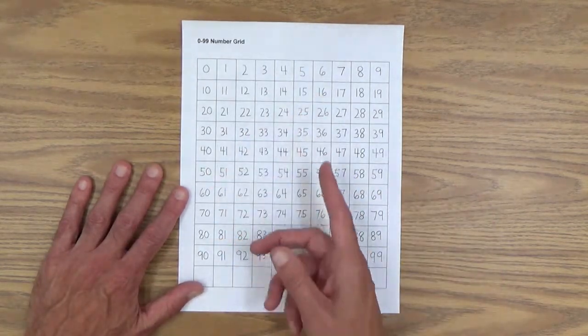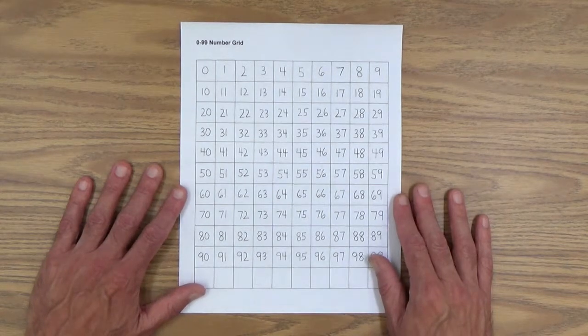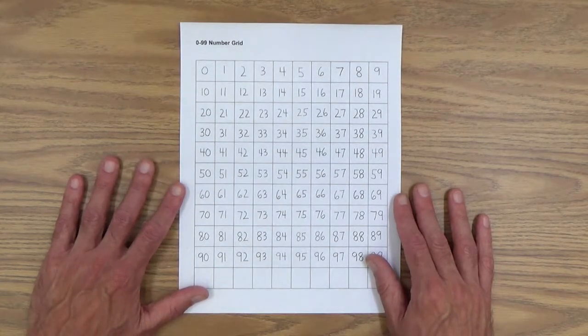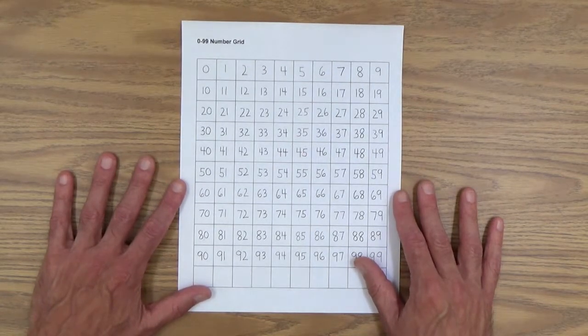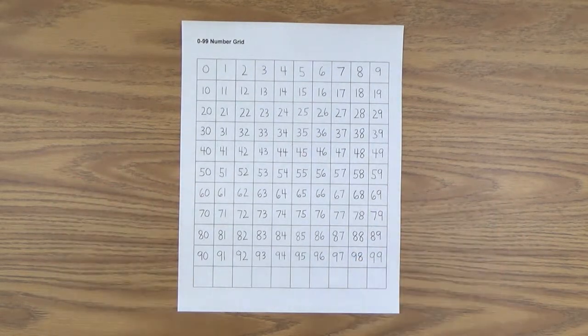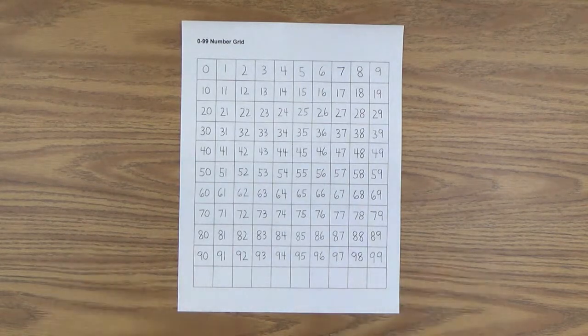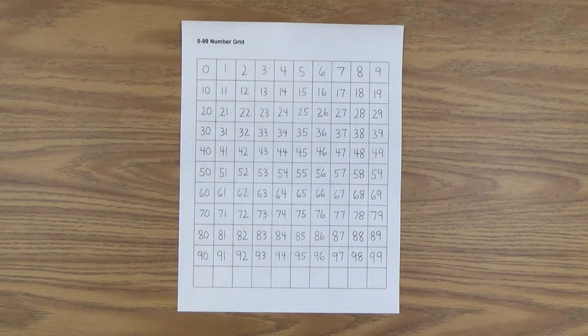And of course, if you're working back up, they go down by 10. And those are important things to know that you can show to your child because it'll help him or her to navigate this number grid. It'll be much easier for them.